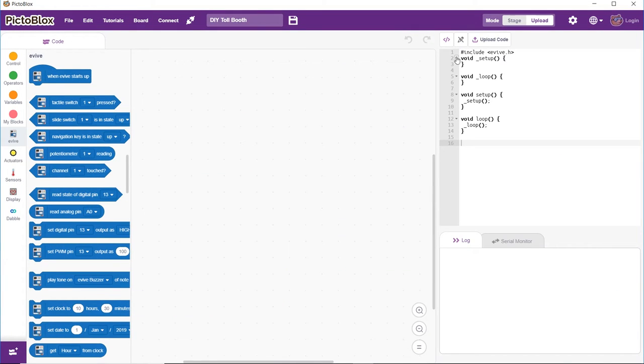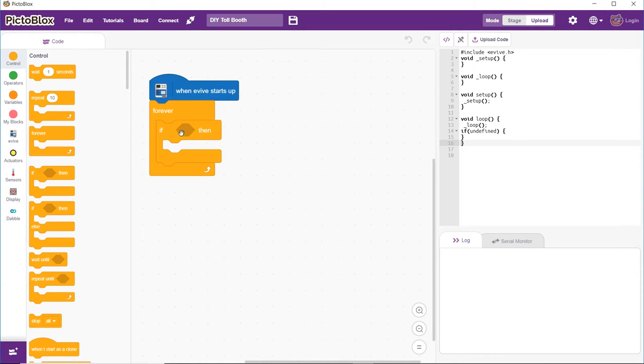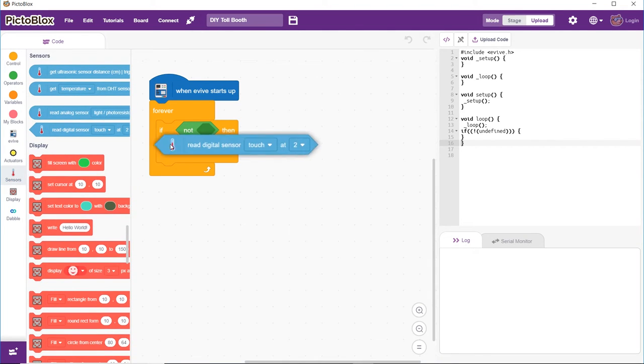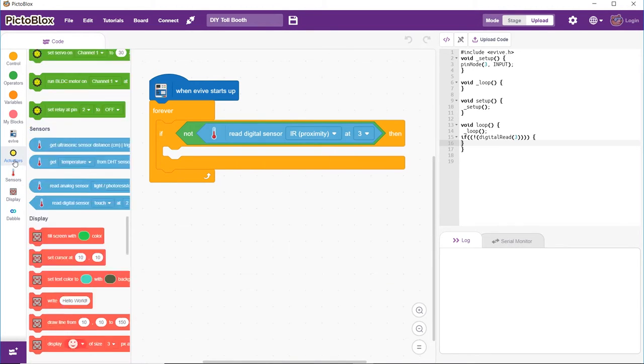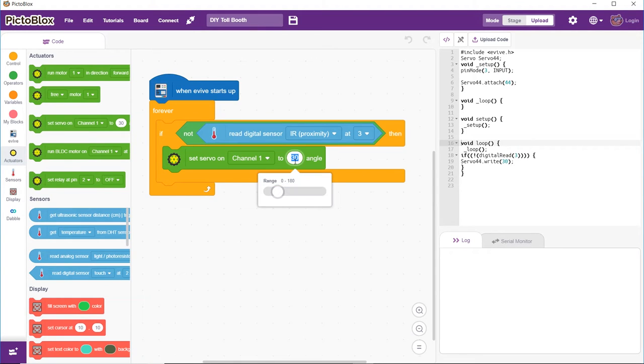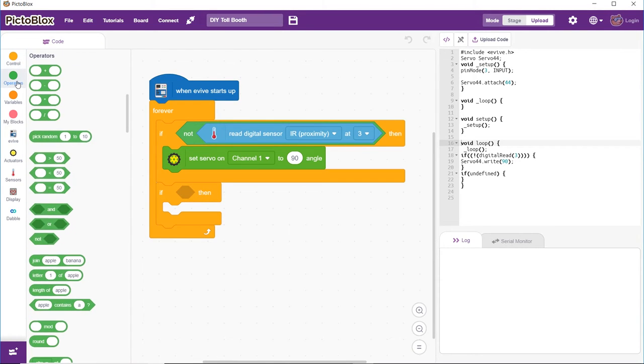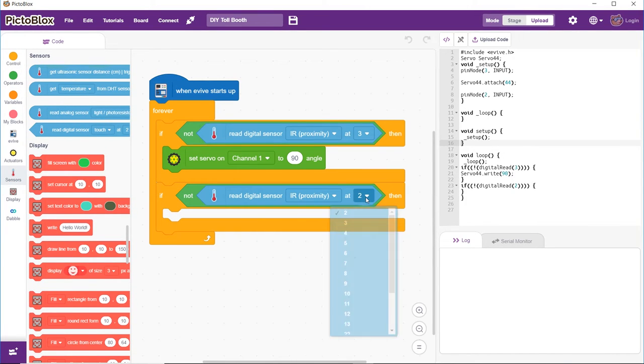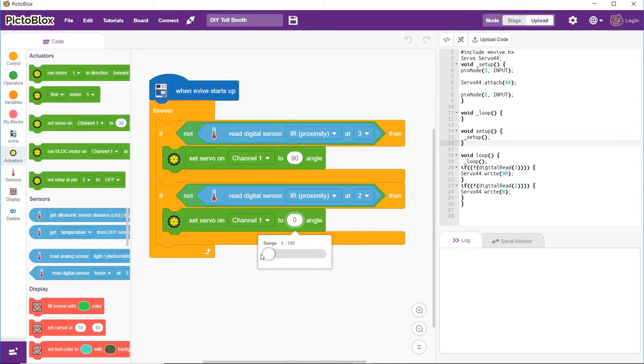Now, let's make a code in Pictoblox. We are going to write the code in the upload mode. The program will start executing as soon as evive starts up. As soon as the first IR sensor which is connected to pin 3 senses the presence of a vehicle, the servo angle changes to 90 degrees and the barrier opens. As soon as the vehicle crosses the barrier and goes past the second IR sensor which is connected to pin 2, the servo angle changes back to 0 degrees, thus closing the barrier. Once done, upload the code.